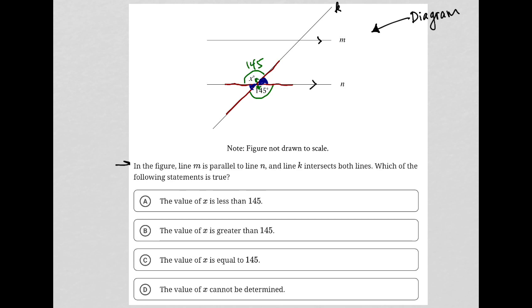Which of the following statements is true? The value of x is less than 145. Nope, x is equal to 145, so that's gone. Choice b, the value of x is greater than 145. No, it's equal.